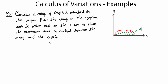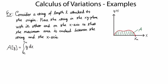At first blush, the functional that would accomplish this seems simple. We're looking for y(x) — that's the curve that maximizes the area A. So the functional is just A[y] = integral from 0 to x_m of y dx. Unfortunately, we don't know how to solve this particular variational problem, because the Euler-Lagrange equation presupposes that you know both the starting point and the ending point.